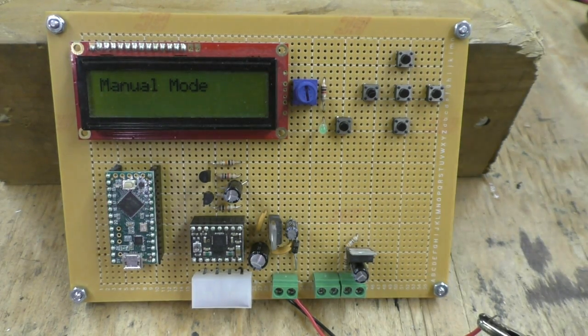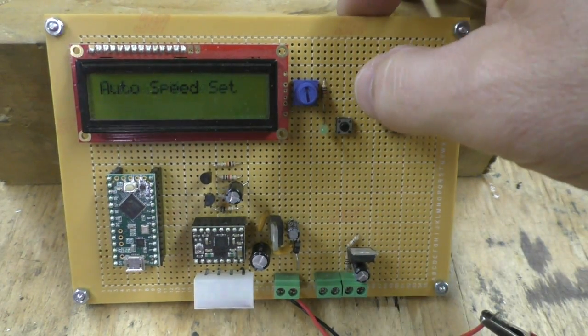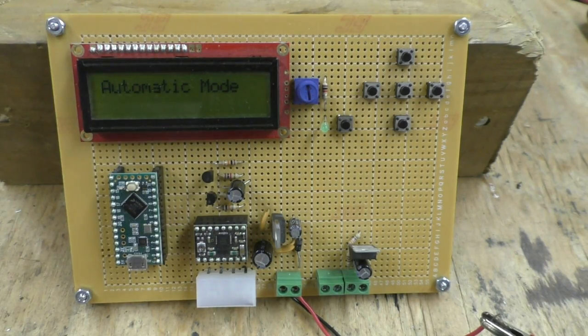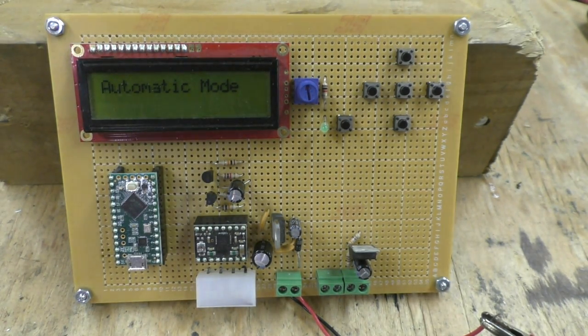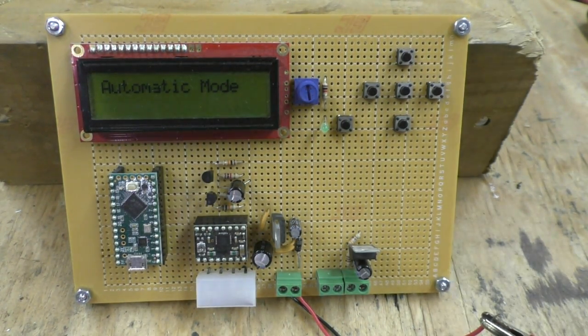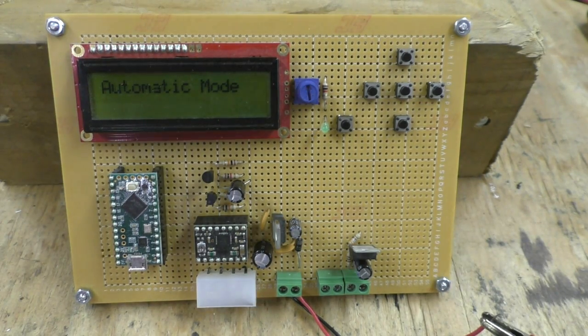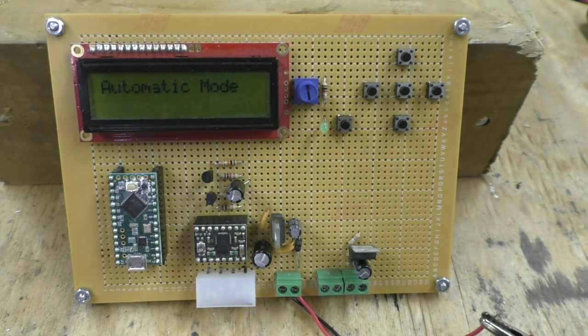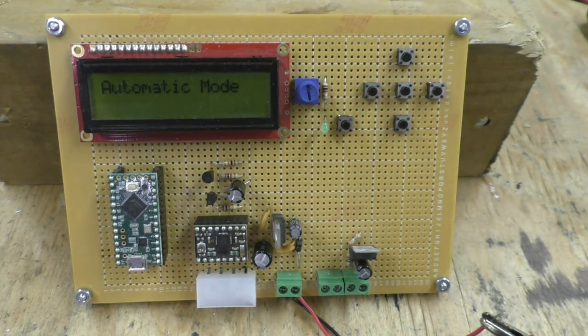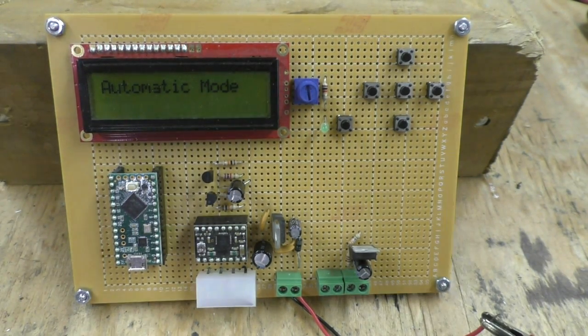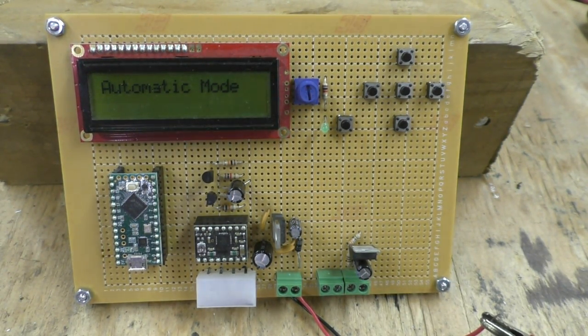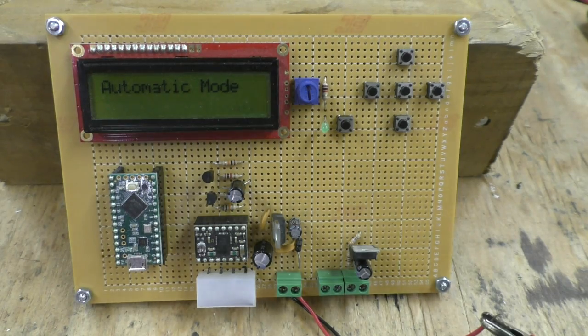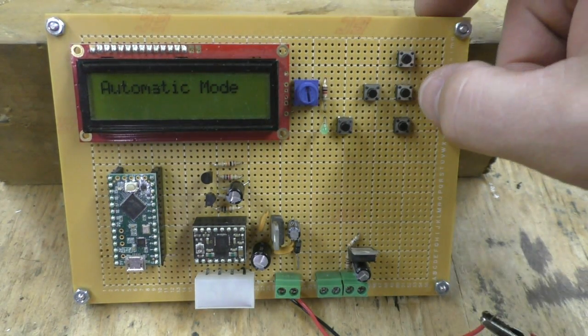The other mode is the automatic mode, and what that will do is it will turn on the PID algorithm and the autocorrect, and it will work to keep your filament at a consistent size by speeding up and slowing down that motor to adjust for your filament.